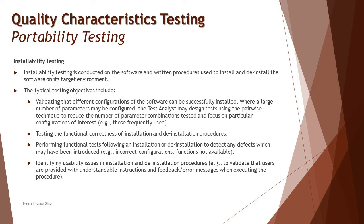Let's talk about the first sub-characteristic: installability. As the name suggests, we are trying to install an application. There are many functional tests to ensure a user finds it convenient to use a system, but all of those can only be done if the system can first be downloaded and installed. Installability is basically conducted on the software and written procedures to check if it can be installed and uninstalled in the target environments.